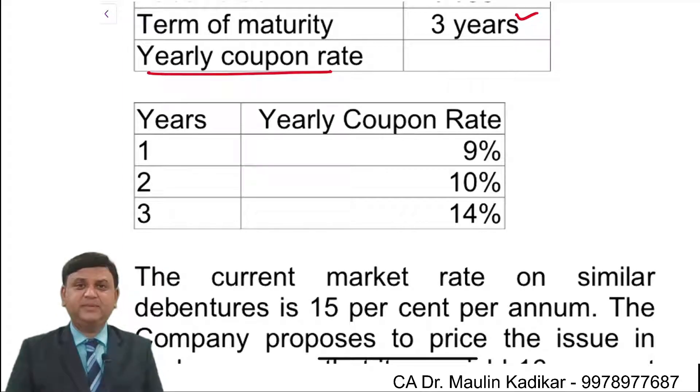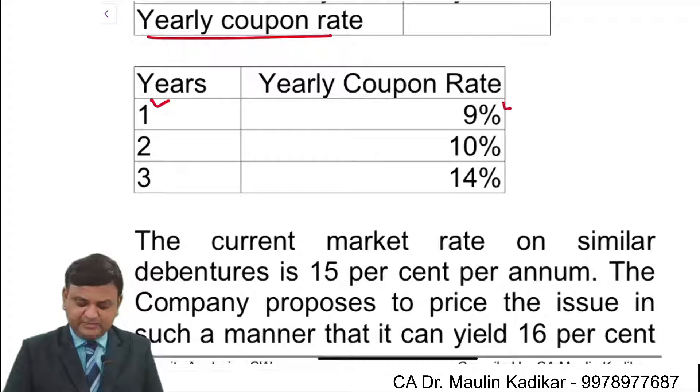Yearly coupon rate means rate of interest. In the 1st year 9%, 2nd year 10%, 3rd year 14%.